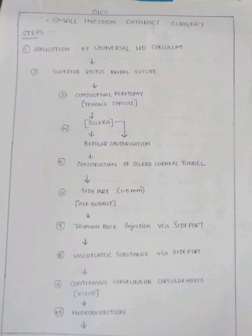The ninth step is continuous curvilinear capsulorrhexis. It is performed with the help of the instrument called a keratome and a 26-gauge needle, which help in performing the continuous curvilinear capsulorrhexis. The ideal size for this is 5.5 to 6.5 mm.